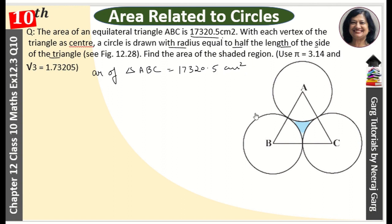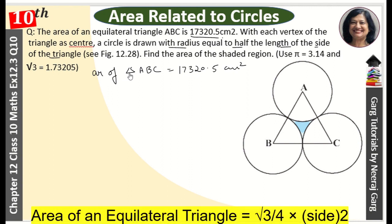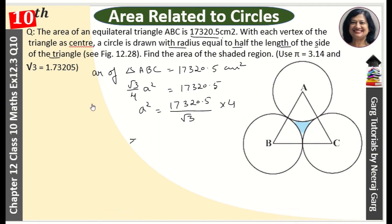Now you will know what the formula is. Area of equilateral triangle is root 3 upon 4, a squared. So this is 17320.5. This is 17320.5 upon root 3 into 4. Root 3 is the value given.